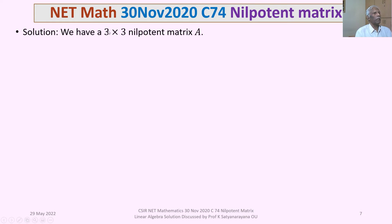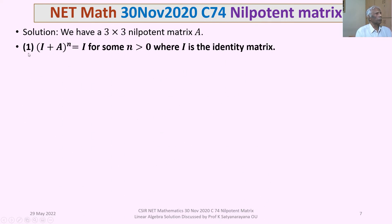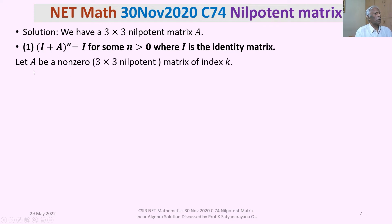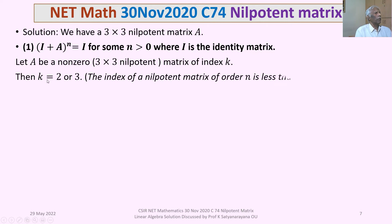We now discuss the solution in detail. We have a 3×3 nilpotent matrix A. For option 1, we examine whether (I + A)^n = I for some positive integer n. Let A be a non-zero 3×3 nilpotent matrix of index k. Since it is non-zero and the index is at most n, k is less than or equal to 3, so k may be 2 or 3.